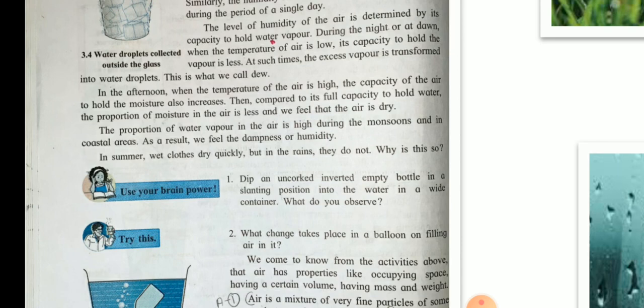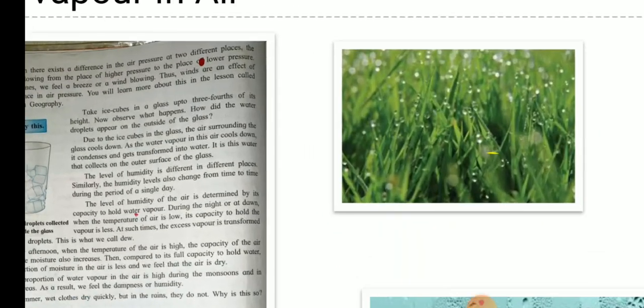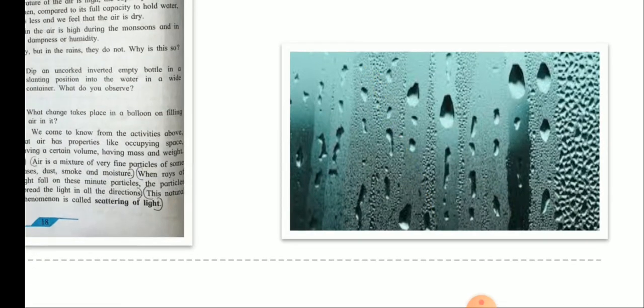In the afternoon, when the temperature of the air is high, the capacity of the air to hold the moisture also increases. Then, compared to its full capacity to hold water, the proportion of moisture in the air is less and we feel the air dry. The proportion of water vapor in the air is high during the monsoons and in the coastal areas. As a result, we feel the humidity in the air. You can see the dew drops on the grass and also on the surface of a glass.